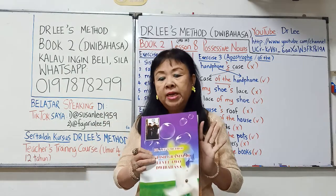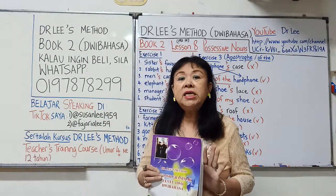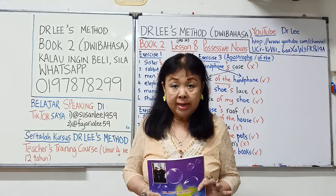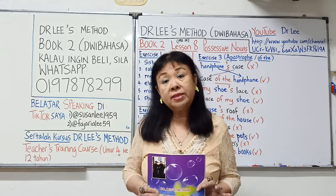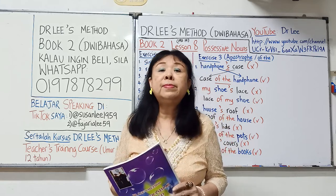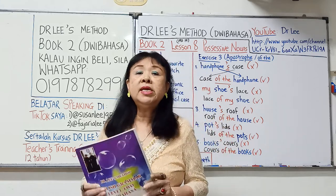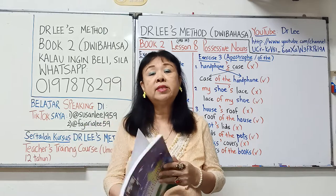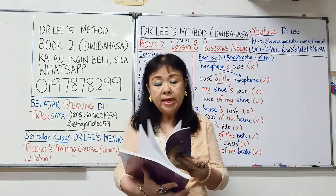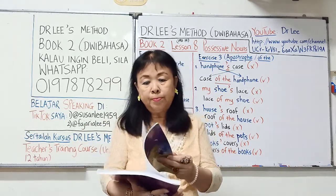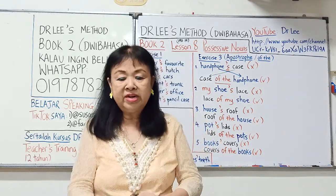Buku ini kesemuanya 40 bab, 40 lessons. Dalam YouTube channel saya, saya hanya memuat naik dalam versi bahasa Melayu sahaja, sebab saya yakin semua orang memahami bahasa Melayu. Hari ini kita di muka surat 19, Possessive Nouns, maksudnya kepunyaan.